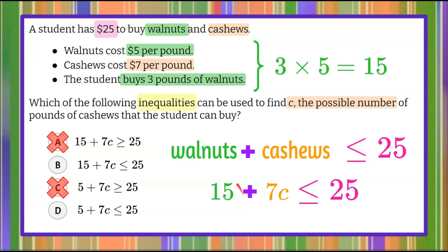So here's our inequality. $15 for the walnuts plus $7 per pound of cashews has to be less than or equal to the $25 that the student has. So let's go look at our answer choices. It looks to me like it's answer choice B, because 15 plus 7C less than or equal to 25 represents what we have.